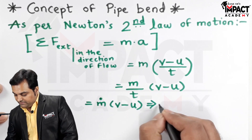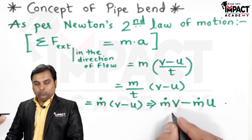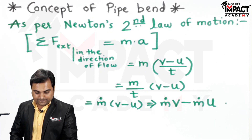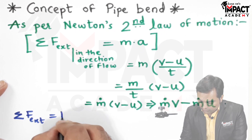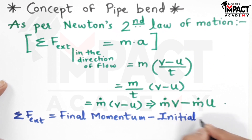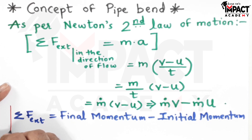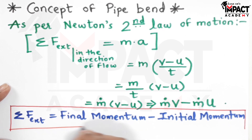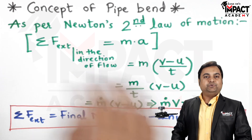So that becomes ṁ, the notation for mass flow rate in kg per second, multiplied by (V minus U). When multiplied inside, it becomes ṁV minus ṁU. Now ṁ·V is called the final momentum and ṁ·U is called the initial momentum. In other words, the summation of all external forces in the direction of flow equals final momentum minus initial momentum. This concept will be used in the case of pipe bend, and now I am going to draw the diagram of a pipe bend.